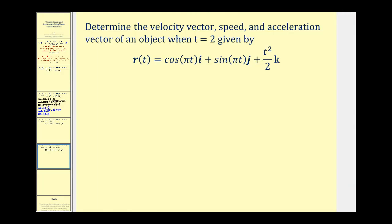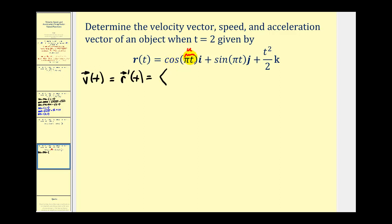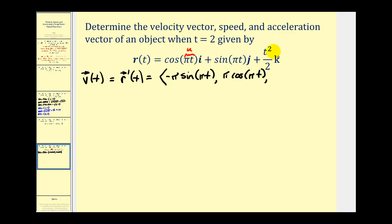Let's look at one more example. We want to find the velocity vector, speed, and acceleration vector of an object when t equals two, given by this vector-valued function. Starting with the velocity vector-valued function — the derivative of the position function — for the x component, the derivative of cosine(πt) requires the chain rule: the derivative of cosine(u) is negative sine(u) times u′, giving us negative π sine(πt). For the y component, the derivative of sine(πt) is π cosine(πt). The derivative of t²/2 is simply t.